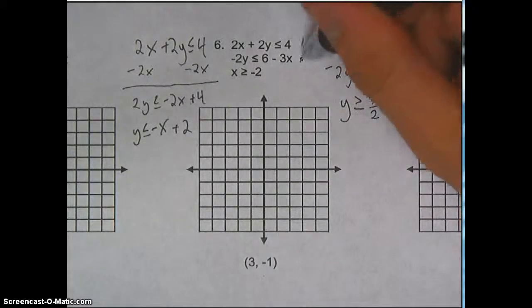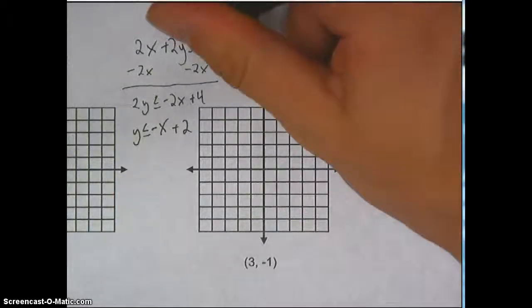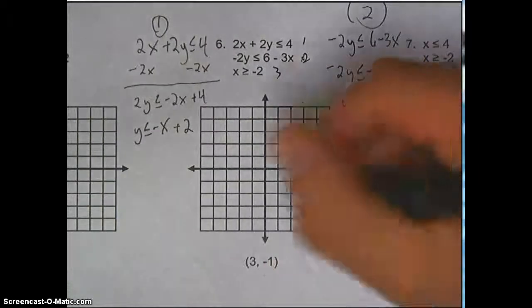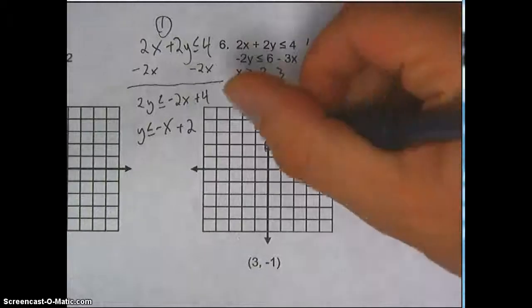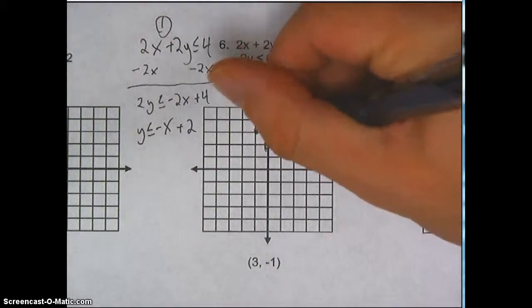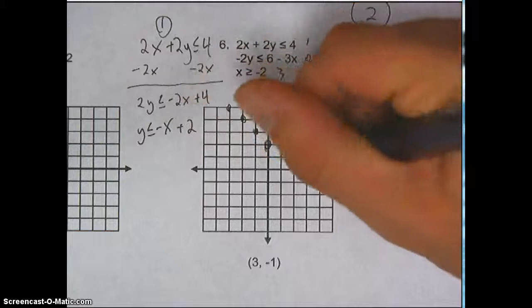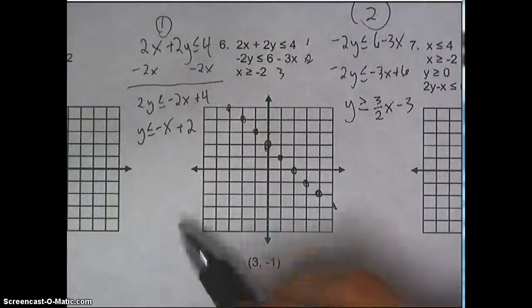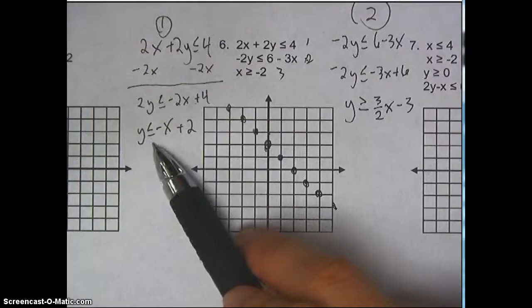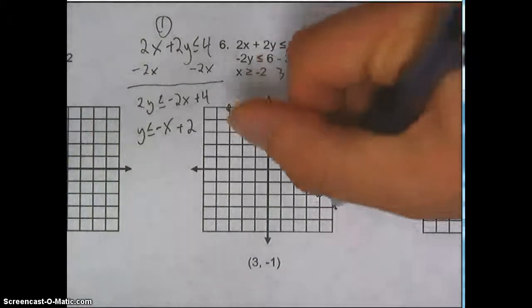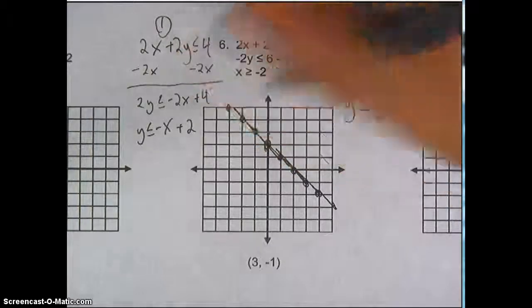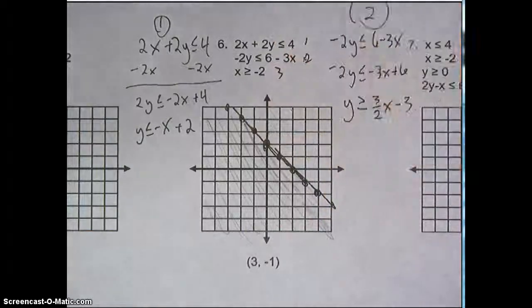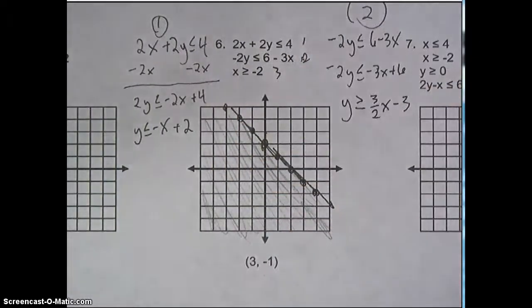I'm going to graph these three equations. Equation one: y is less than or equal to negative x plus 2. Y-intercept at 2, slope is negative 1 — up 1 to the left 1, up 1 to the left 1, up 1 to the left 1. These are solid lines because there's the less than or equal to sign. I'm going to use my pencil to lightly shade everything below that line.